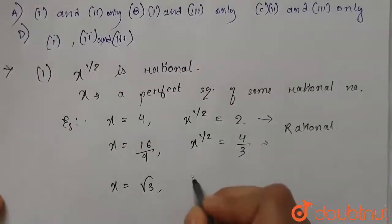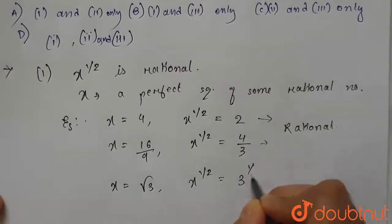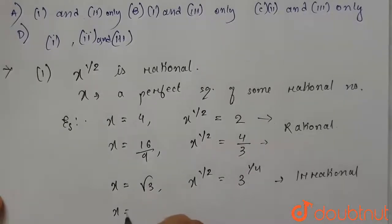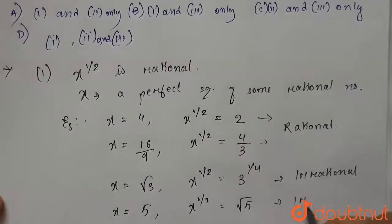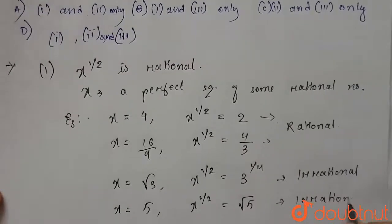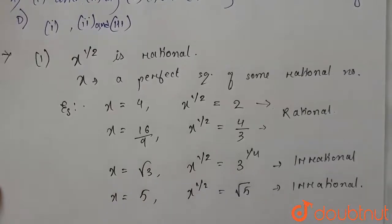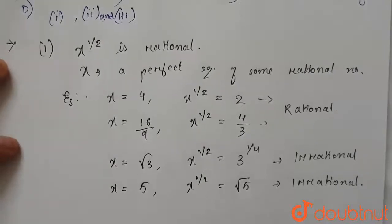If x equals root 3, which is an irrational number, then x to the power half will be 3 to the power 1 by 4, which is also irrational. Again, if x equals 5, which is not a perfect square, then x to the power half will be root 5, which is irrational. Therefore, if x to the power half is rational, then x is definitely also rational.